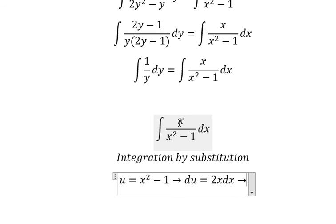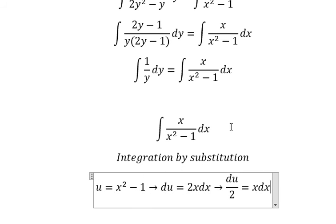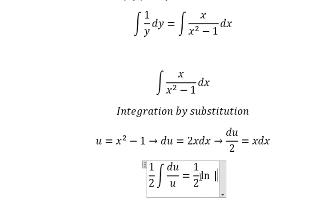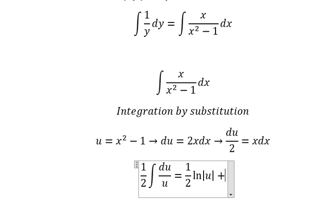Because we don't have number 2, so we need to divide both sides by number 2. So this one we change by u. The x we change by du over number 2. The integration of this one we have ln of the absolute value of u and we put about c.